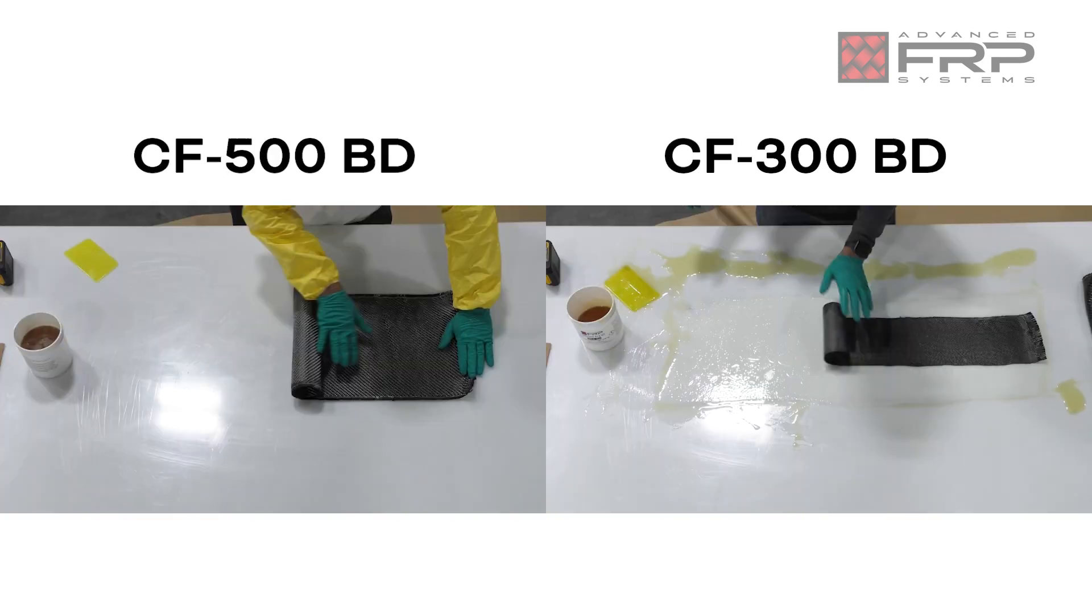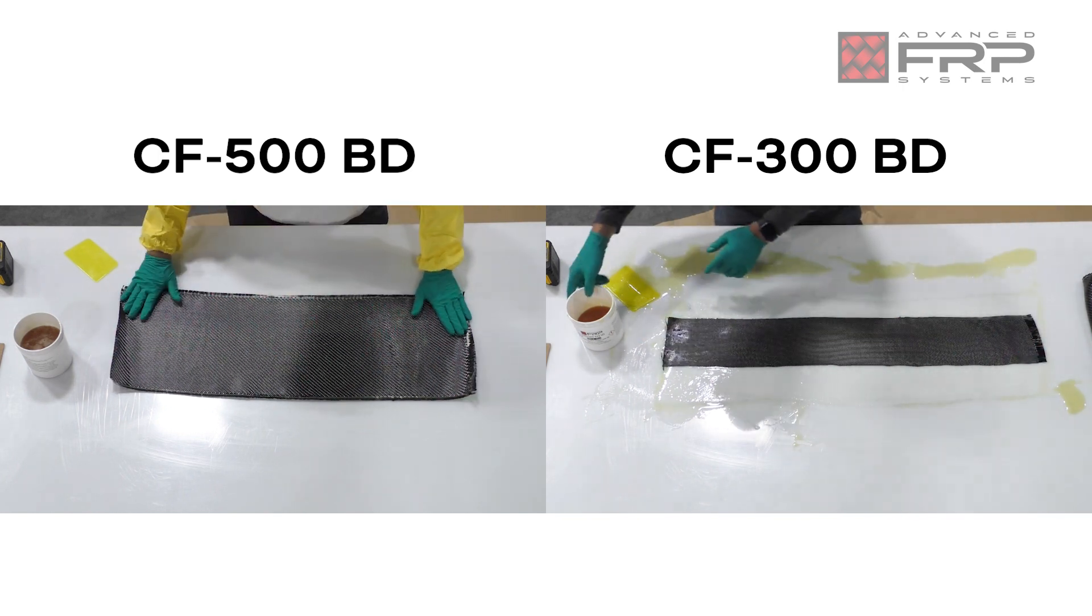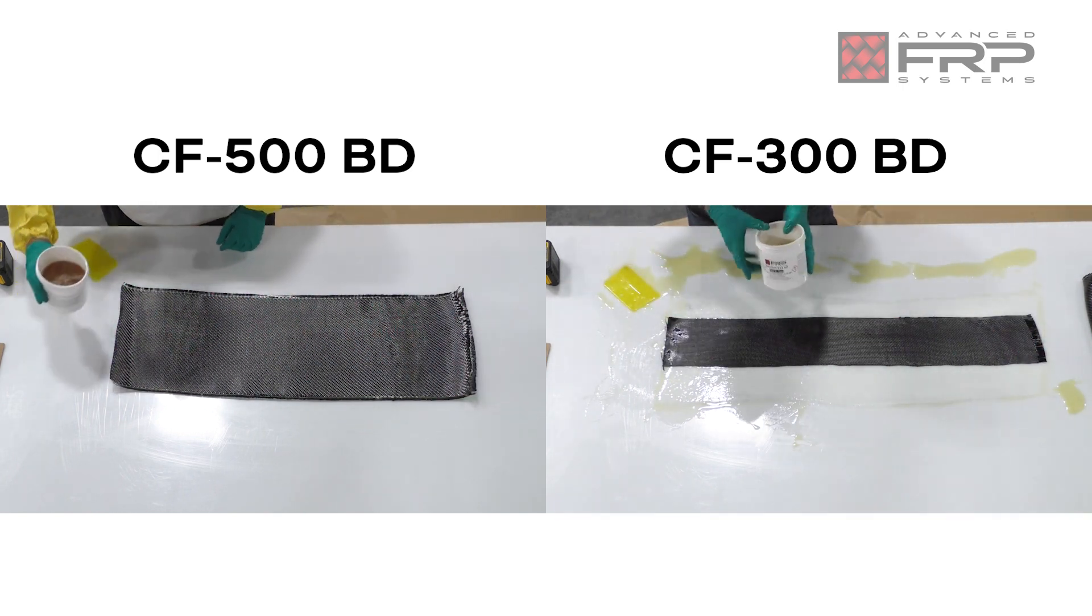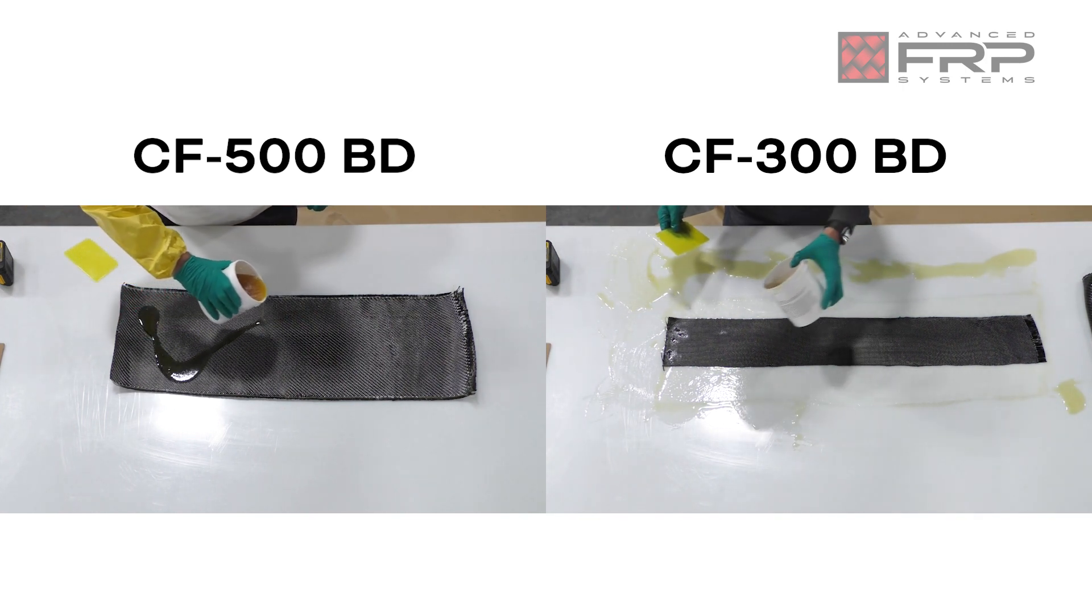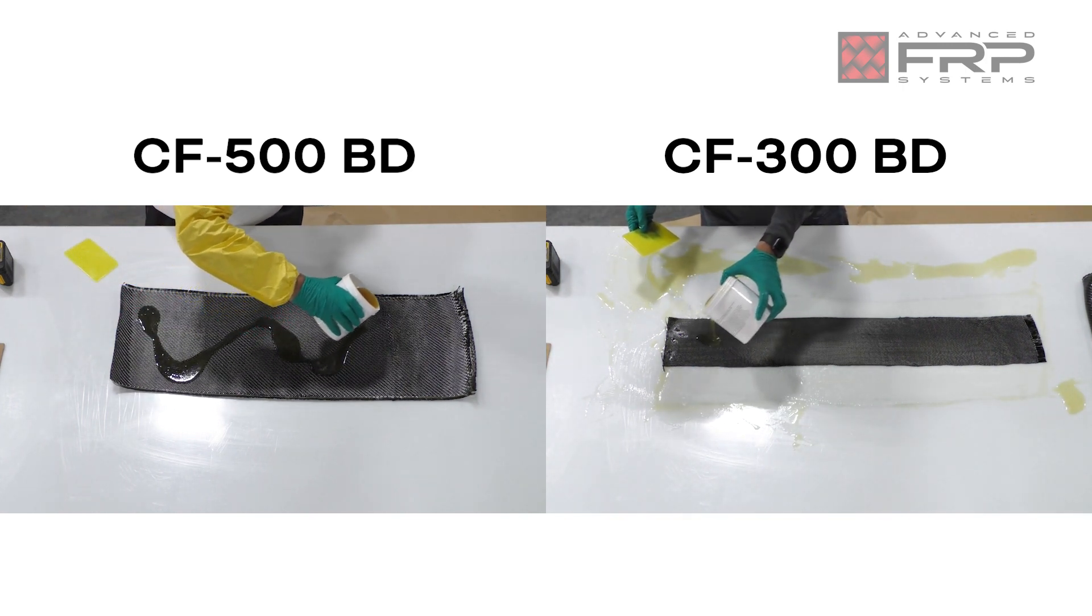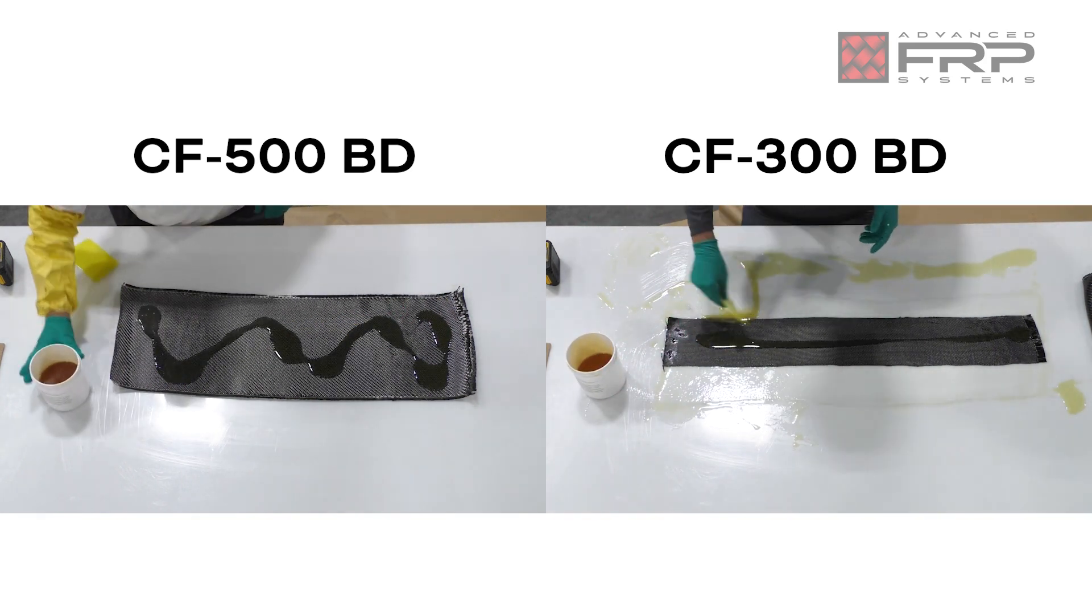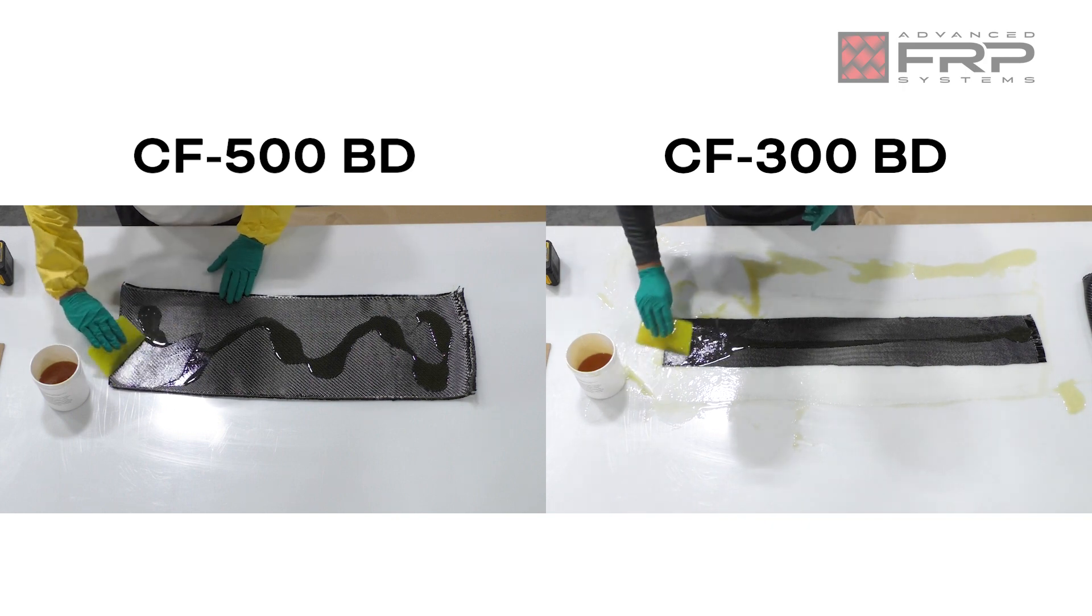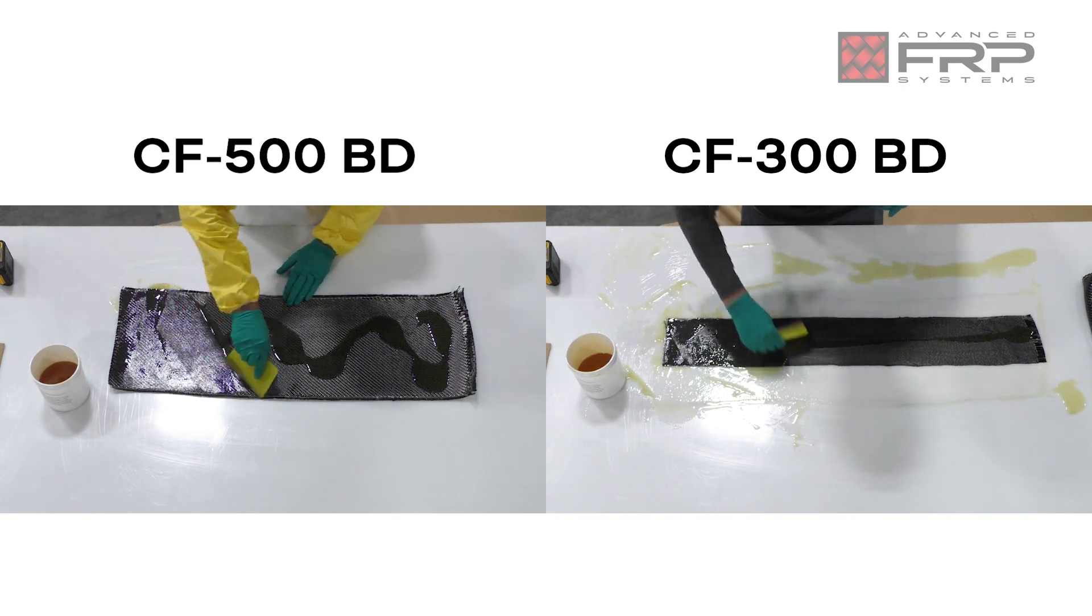Roll out the carbon fiber to a comfortable length and pour out the saturant directly onto the carbon fiber. Using a trowel applicator, spread the saturant evenly over the surface of the carbon fiber, ensuring that the entire surface area is covered, leaving no exposed dry spots. Apply light pressure and push the saturant into the carbon fiber threads in a smooth up and down motion.